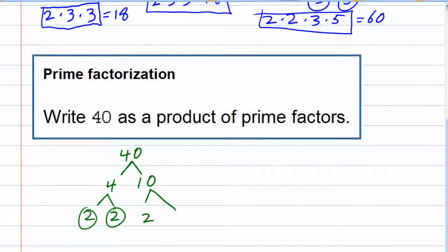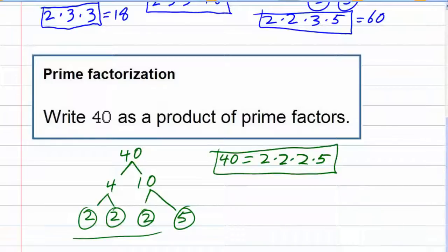4 we can write as 2 times 2, which both of those are prime numbers. 10 we can take as 2 times 5, and again both of those are prime numbers. So we've taken all of the branches all the way down to only prime numbers. We can list 40 as prime factors being 2 times 2 times 2, because we had 3 of them, and then we had that one 5 as well. 40 is 2 times 2 times 2 times 5, and that is the prime factorization of 40.